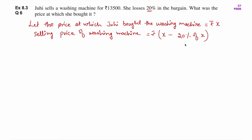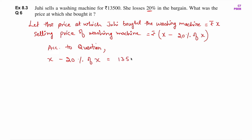Profit and loss होता है cost price के ऊपर, so 20% जो loss हो रहा है वो 20% of X है, क्यूँकि X को हमने assume किया है cost price. Question में दिया है कि washing machine उसने Rs. 13,500 में sell की, so selling price 13,500 है. Variable की form में selling price है X minus 20% of X. हम इन दोनों को equate करेंगे: X minus 20% of X is equal to 13,500.